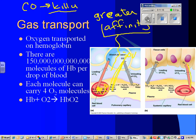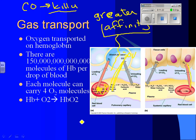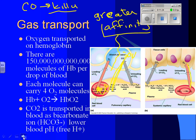Carbon dioxide is transported in the blood as bicarbonate ion — technically as carbonic acid. This lowers the pH of your blood and makes it more acidic. That's really important when we talk about the control of respiration tomorrow.